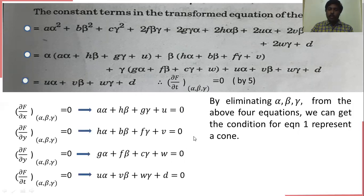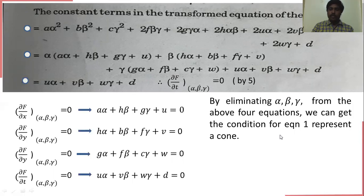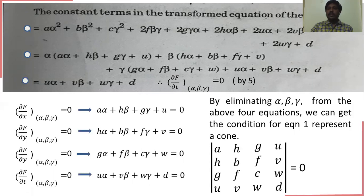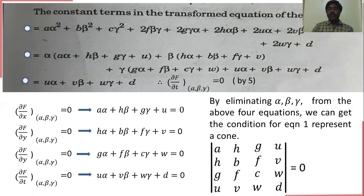From all the above conditions, we have proved that if these conditions are true, the given equation represents a cone. By eliminating α, β, γ from the 4 equations using the determinant method, taking all coefficients, the condition is: the determinant |a h g u; h b f v; g f c w; u v w d| = 0. This is the condition for equation 1 to represent a cone.